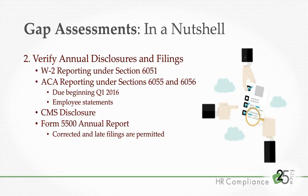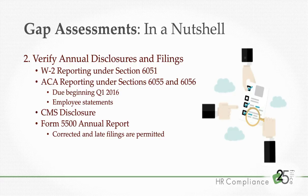Also under the ACA, you have reporting under Sections 6055 and 6056. This is a new requirement — the first time it'll be due is in the first quarter of 2016. It does not apply to all employers; rather, it applies to employers with generally 50 or more full-time employees and employers who have a self-funded medical plan. These employers will have to comply with reporting requirements, including submission of documents to the IRS as well as some employee statements. Right now, if you were conducting an assessment, you wouldn't be checking for those filed reports, but going forward they will be part of your checklist.